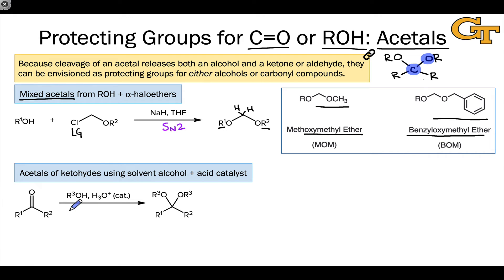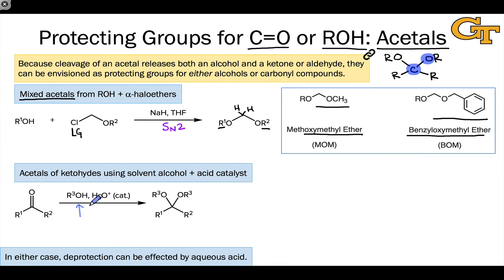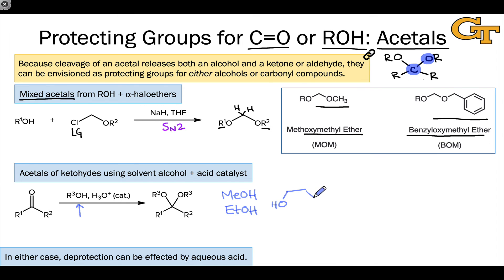Typically, we use the cheapest alcohol we can find for this protection process — the cheapest alcohol that will work — because we really don't care about the alcohol per se, since in the deprotection stage we're going to remove it anyway. Things like methanol are very commonly used to create dimethyl acetals, and ethanol is also very commonly used. You'll also see diols used, which create cyclic acetals — for example, ethylene glycol (HOCH2CH2OH) is commonly used. To protect, we use solvent quantities of the alcohol plus an acid catalyst to drive the reaction forward toward the acetal.